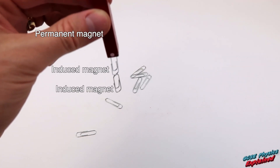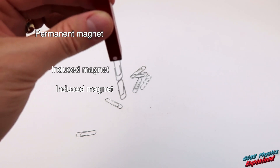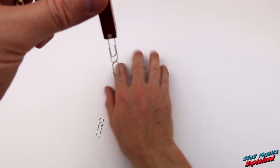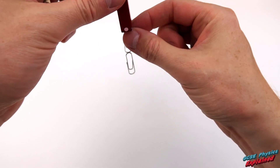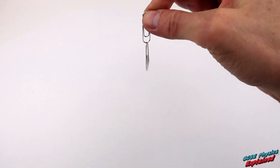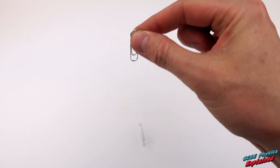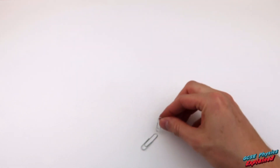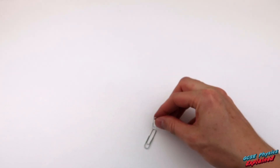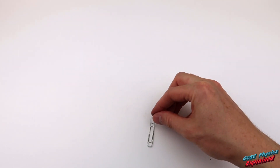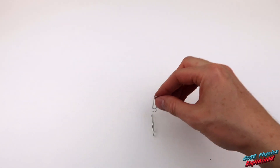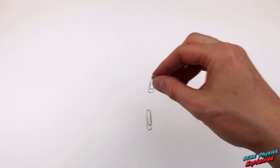When removed from the magnetic field, an induced magnet loses most or all of its magnetism quickly. Now when you disconnect the magnet, all or nearly all of the magnetism will disappear, so that bottom paper clip should drop off. It's still retaining a little bit of magnetism, but not for long — it's losing its magnetism. And that's induced magnetism.